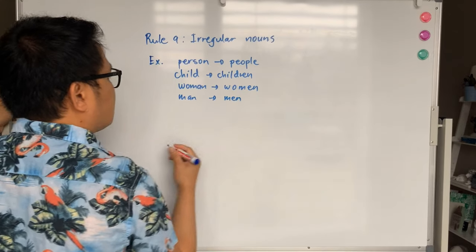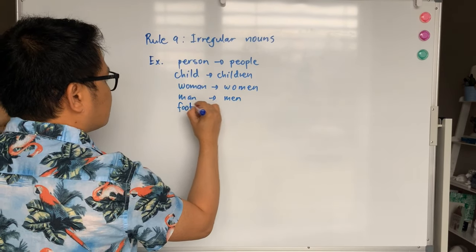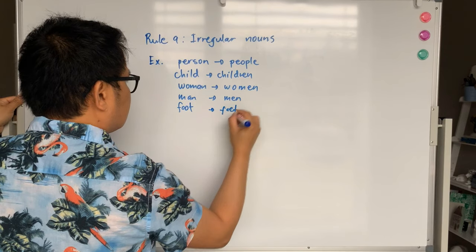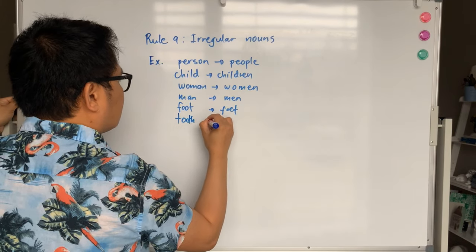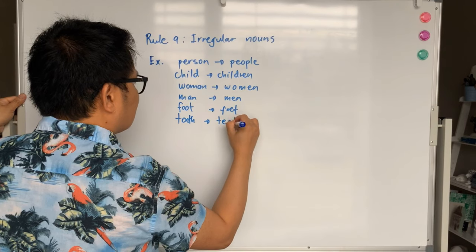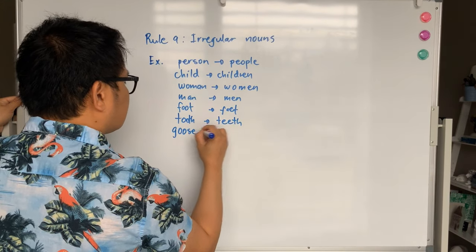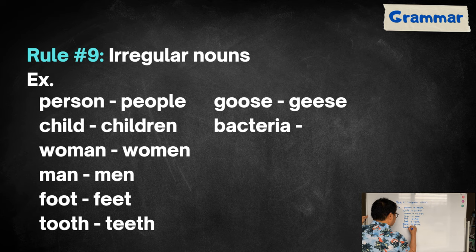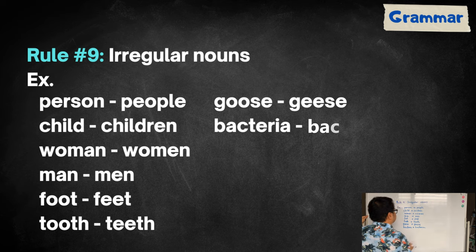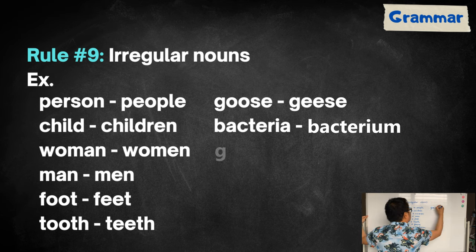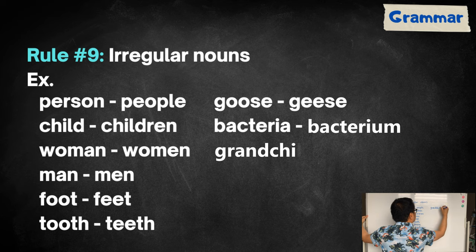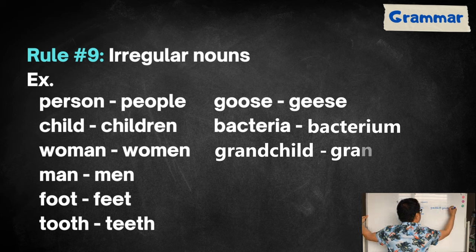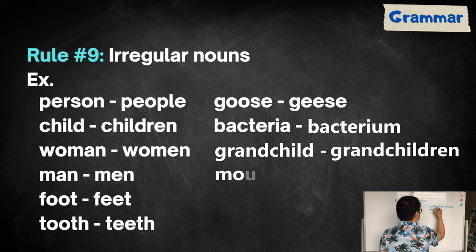Foot will become feet, tooth will become teeth, goose will become geese, bacteria will become bacterium, grandchild will become grandchildren, and mouse will become mice.